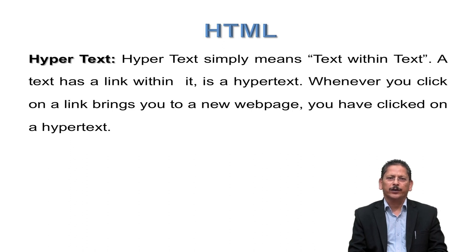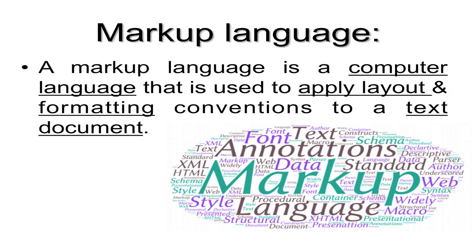Whenever you click on a link, it brings you a new web page — you have to click on the hypertext. The link will be shown in blue color, and as we click on that link, it will open the new hypertext and a new page. Markup language, on the other hand, is a computer language used to apply layout and information convention to a text document.